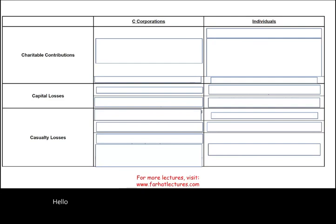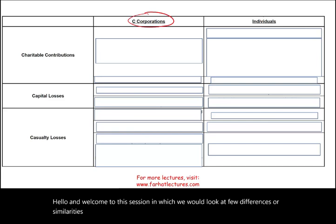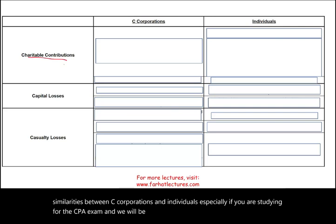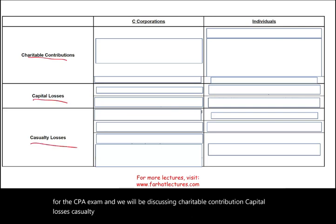Hello and welcome to this session in which we look at differences and similarities between C-corporations and individuals, especially if you are studying for the CPA exam. We will be discussing charitable contribution, capital losses, casualty losses, long-term capital gains, ordinary income, and penalty-related issues.